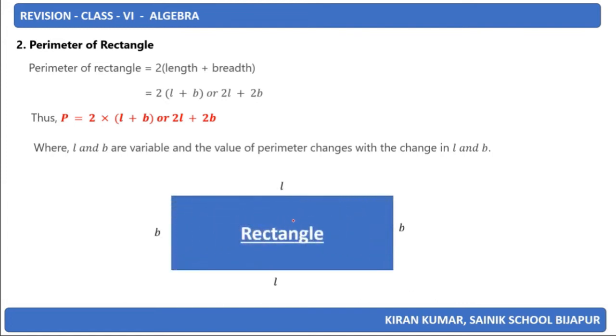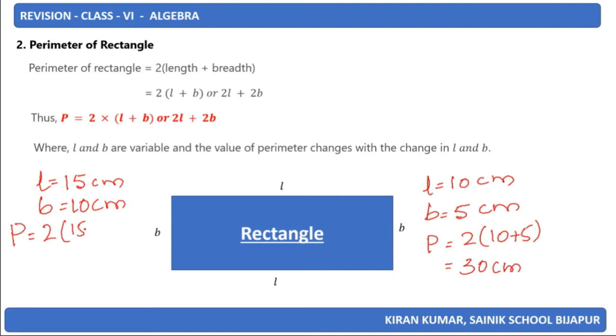Look at this rectangle. If the length is 10 cm and breadth is 5 cm, perimeter is 2×(10+5)=30 cm. If the length is changed to 15 cm and breadth to 10 cm, the perimeter now will be 2×(15+10)=50 cm. So the value of the perimeter varies with the variables length and breadth.